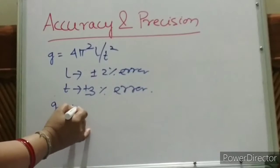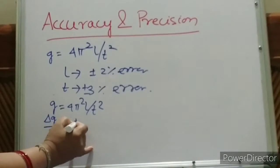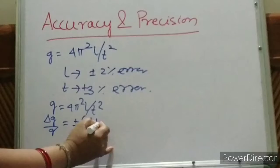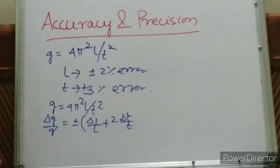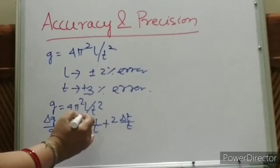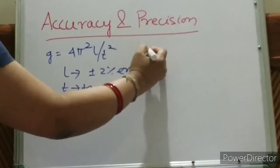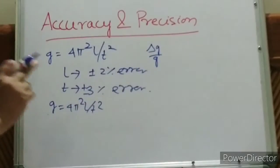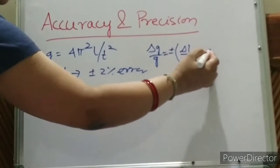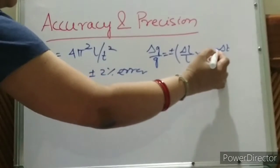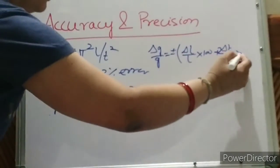So, g = 4π²l / t². What is delta g by g? Delta g by g equals ±(delta l by l) plus 2 times (delta t by t). For percentage of error, we multiply by 100. So it becomes: ±(delta l by l × 100) + 2 × (delta t by t × 100).